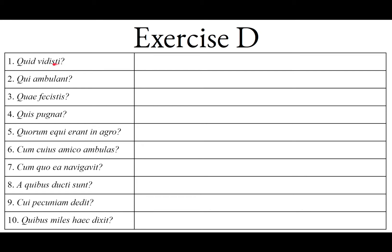Vidisti is second person singular — the person doing it is you. So quid cannot be the subject if you are the subject; you are doing this action to this thing. Therefore quid is the direct object. What did you see? That's why it's neuter — what thing did you see? Interrogative pronoun: what did you see?